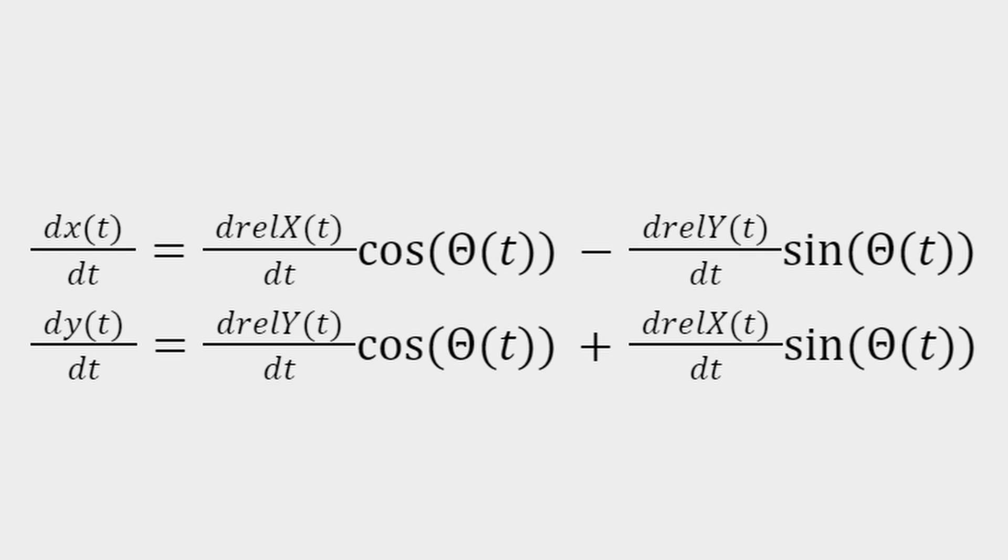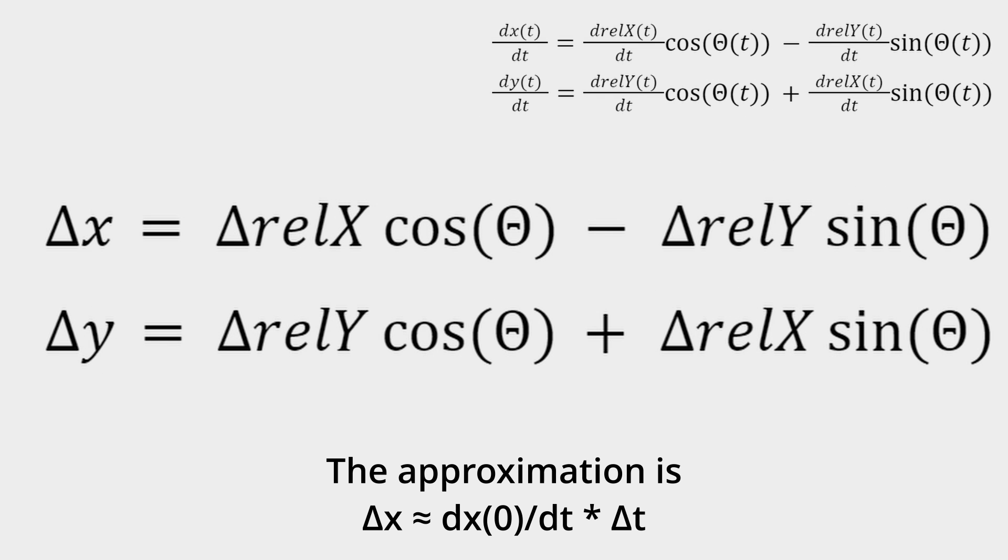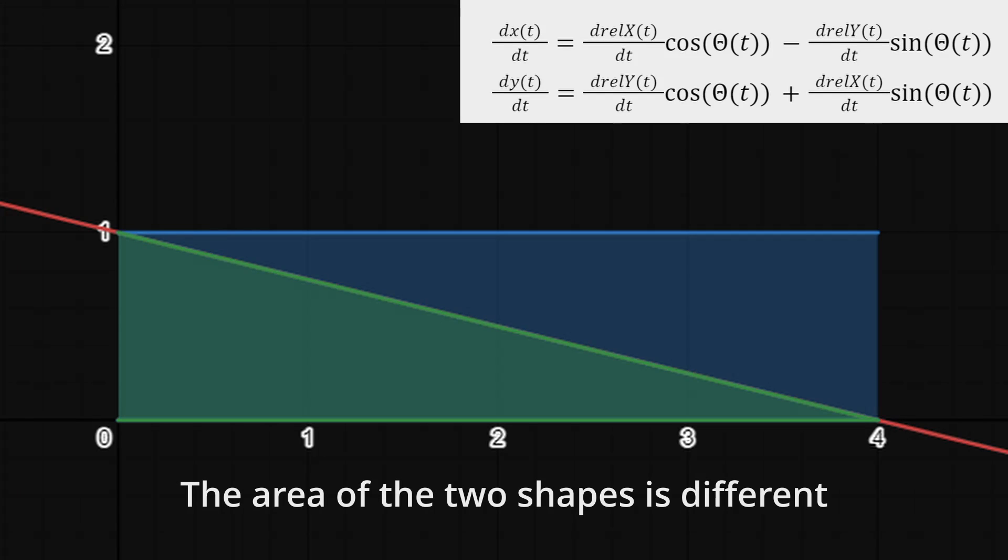Position is equal to velocity times time. So, we simply need to multiply our velocity by time, and we get our answer, right? Congratulations, you just found the mathematical way to arrive at linear odometry. Unfortunately, if we want to go any further than this, we need to use calculus, because when the value of our velocity isn't constant, simply multiplying by speed won't give us the correct answer. We need to use an integral.